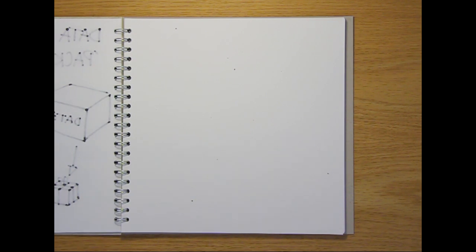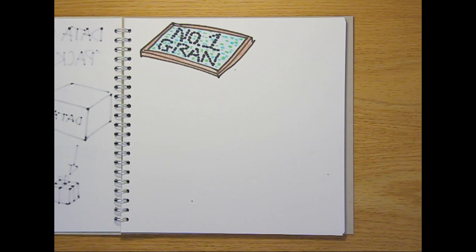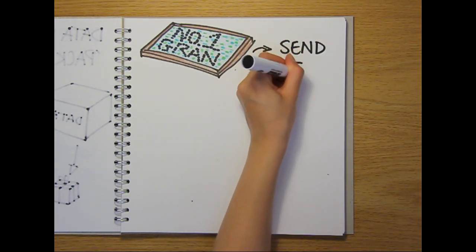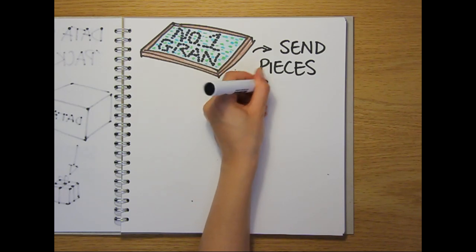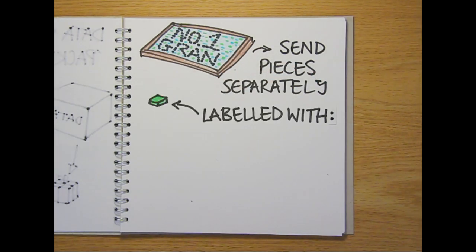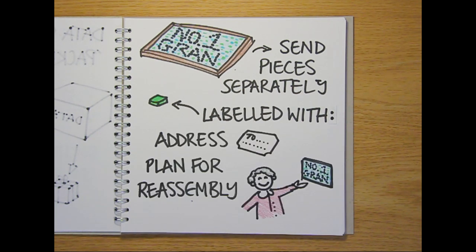A helpful way to think about this is to imagine that you're trying to send a huge mosaic in the post to your grandma. Fully constructed, it's too large and too fragile to be posted. So instead, you dismantle it and send each tile individually, along with two bits of critical information: the address where your gran lives, and the plan for the mosaic so she knows where each piece goes when she puts it back together.